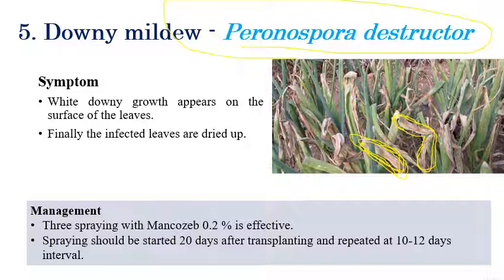For management of Downy Mildew: spraying Mancozeb at 0.2 percent is effective. Spraying should be started 20 days after transplanting and repeated at 10 to 12 day intervals.